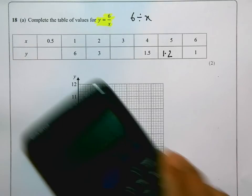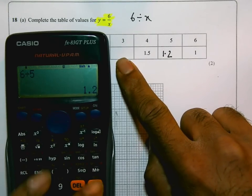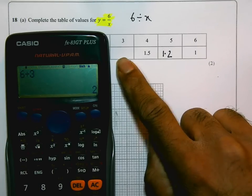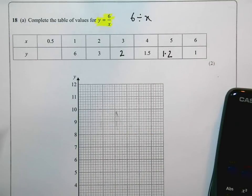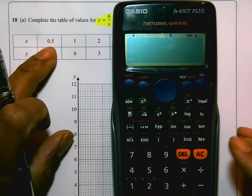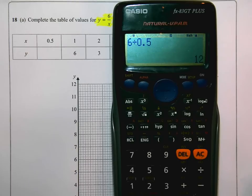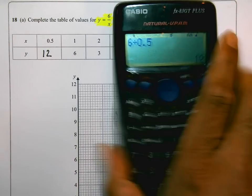Then the next one over here. So I'm going to do 6 divided by, and x is 3 here. So 6 divided by 3 gives me 2. I'm going to put 2 in there. And for the final one, x is 0.5. So I'm going to do 6 divided by 0.5. And that gives me 12. So the table there is complete.